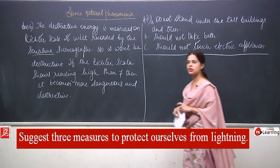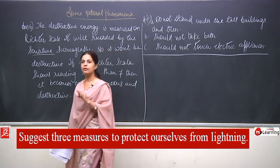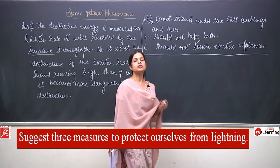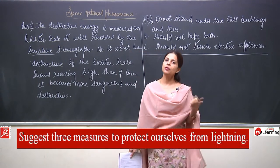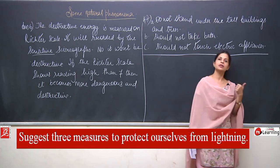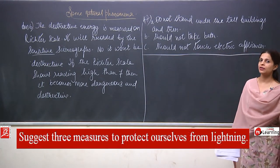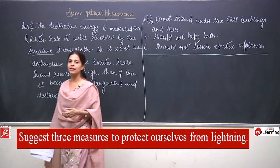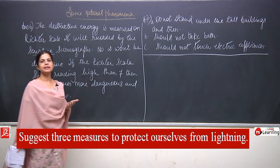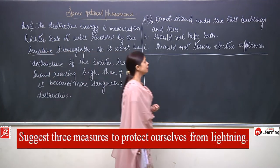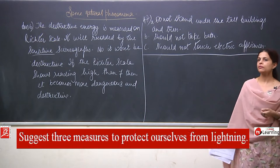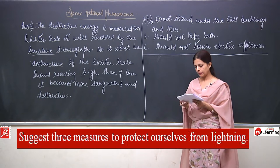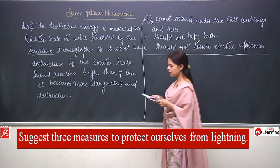Question number 7 was about three measures to protect ourselves from lightning. We should not go out unnecessarily; if going out, do not carry an umbrella as it is a good conductor and will pass the electric current from lightning. We should not stand under tall trees or tall buildings, and should not touch electric appliances.